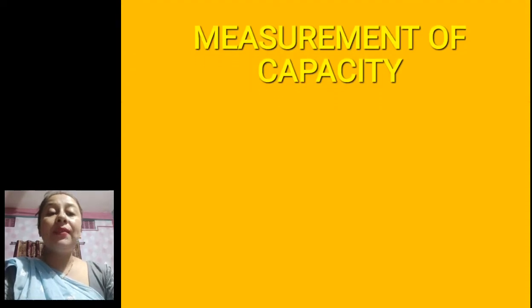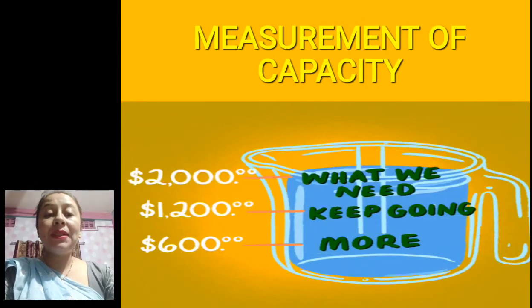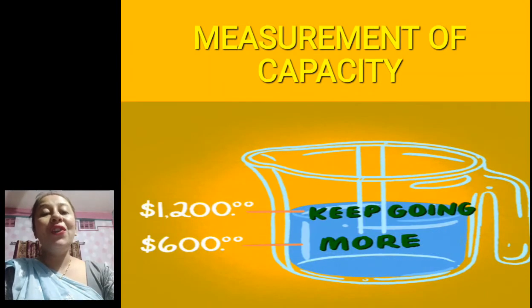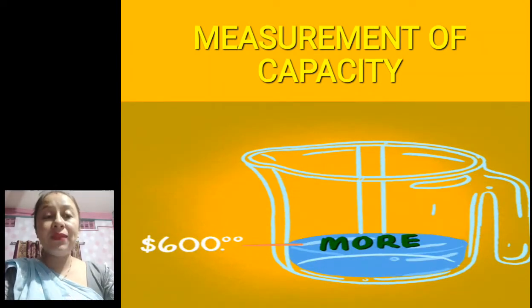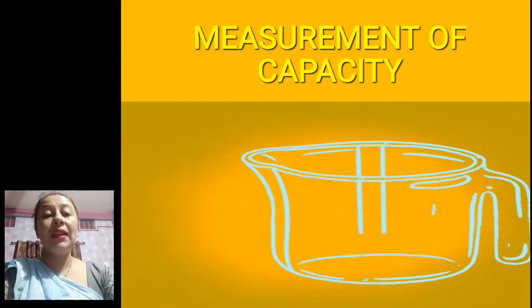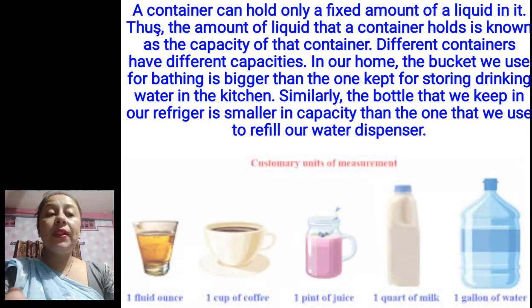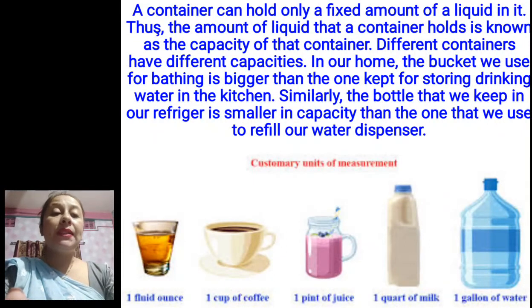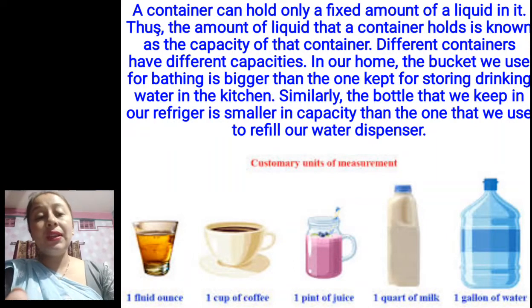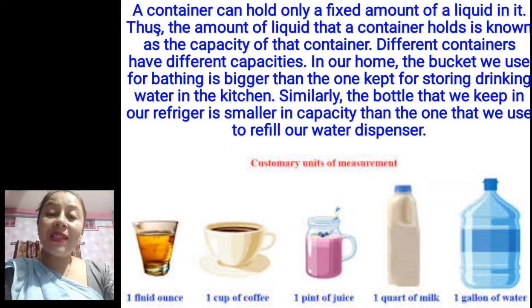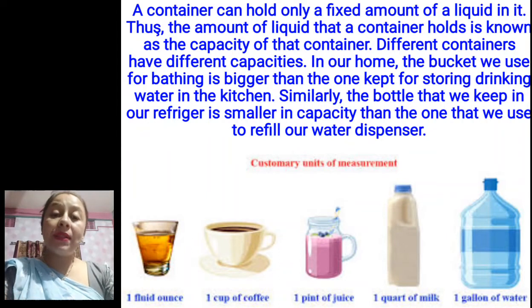Next is measurement of capacity. It is the measurement of liquid or fluid. A container can hold only a fixed amount of liquid in it — the amount of liquid that a container can hold is known as the capacity of that container. Like your water bottle — if it is larger in size, it can hold one liter of water; if it is smaller in size, it can hold half a liter. So that amount is known as the capacity of the container.